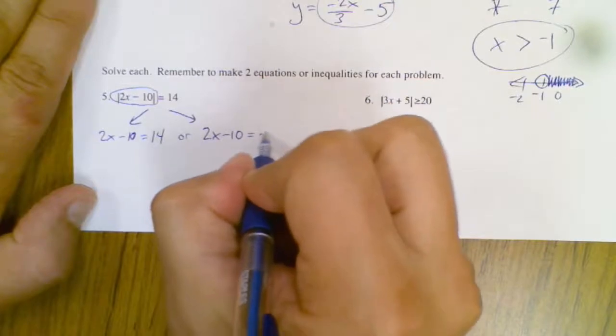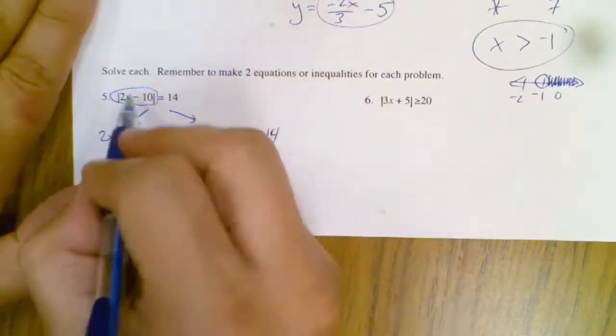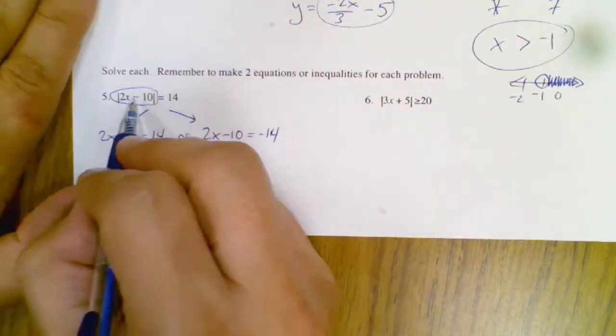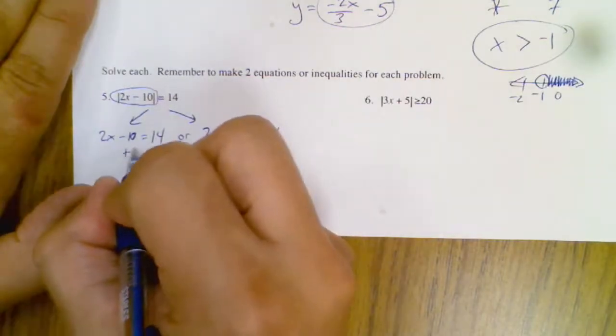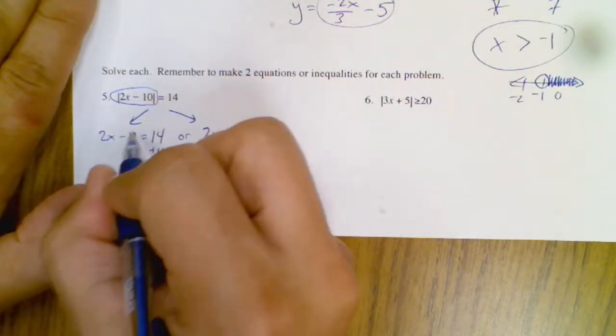Because you don't know what was inside here, whether it's positive or negative, because absolute value makes whatever's inside positive. So add 10.